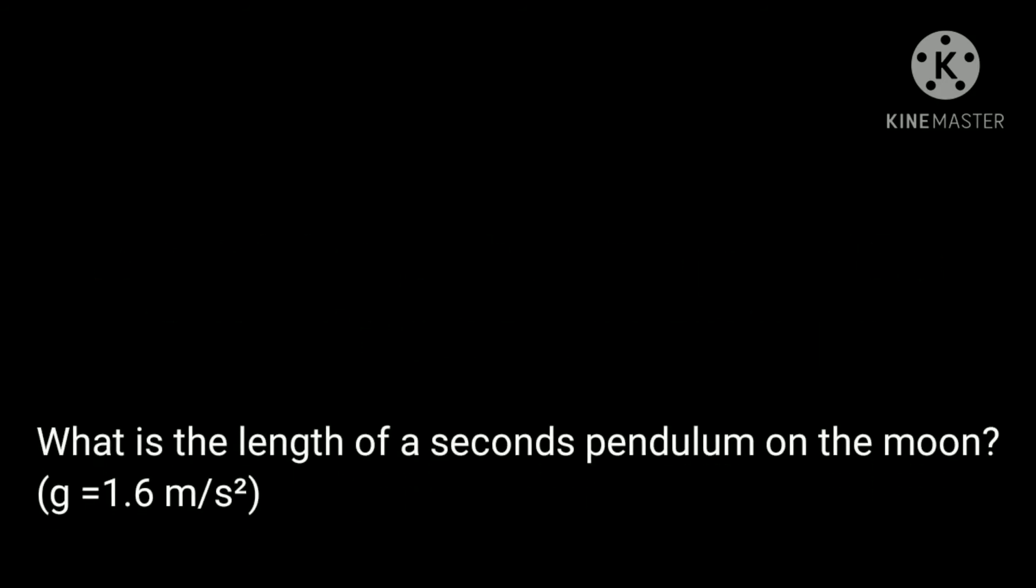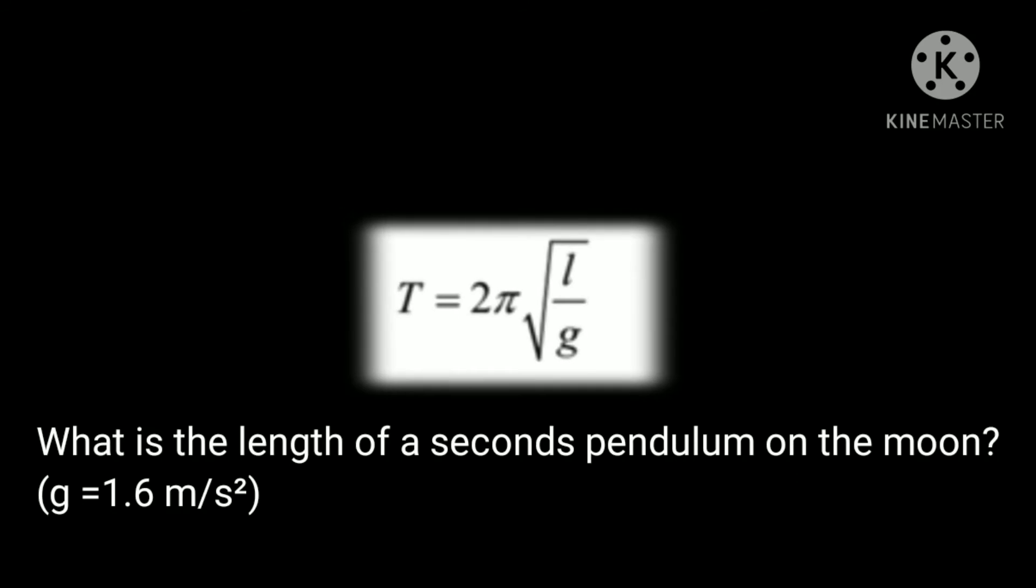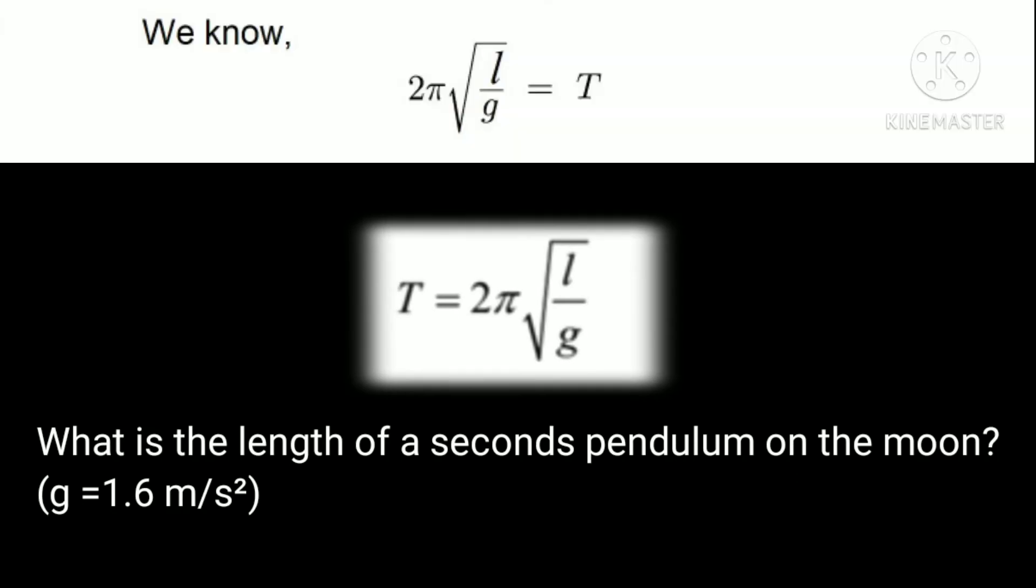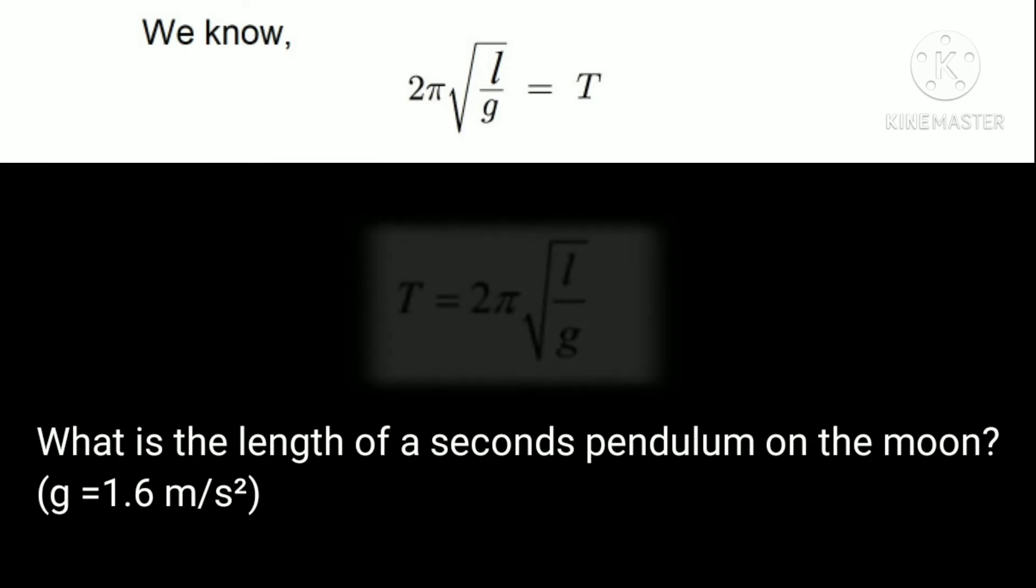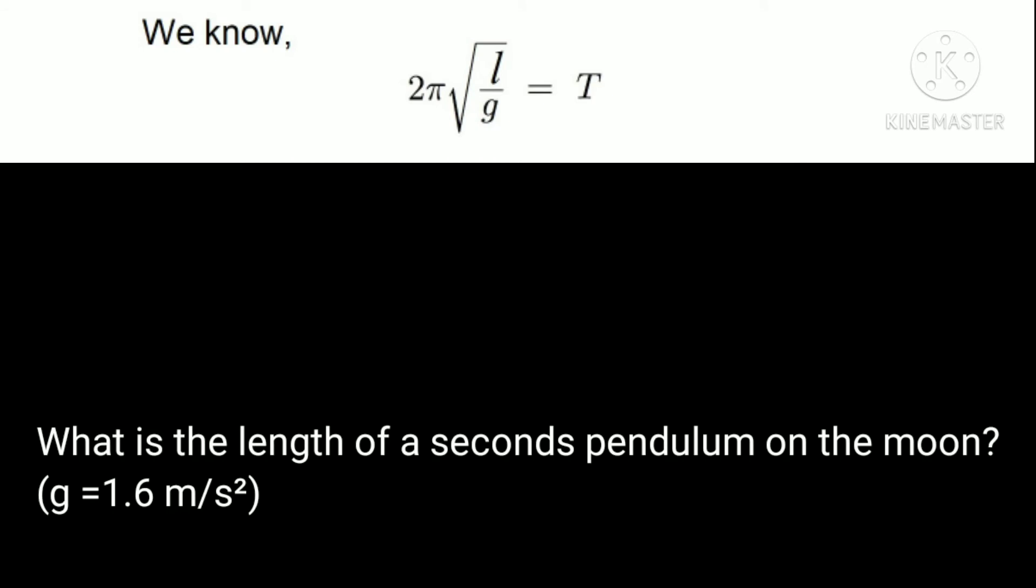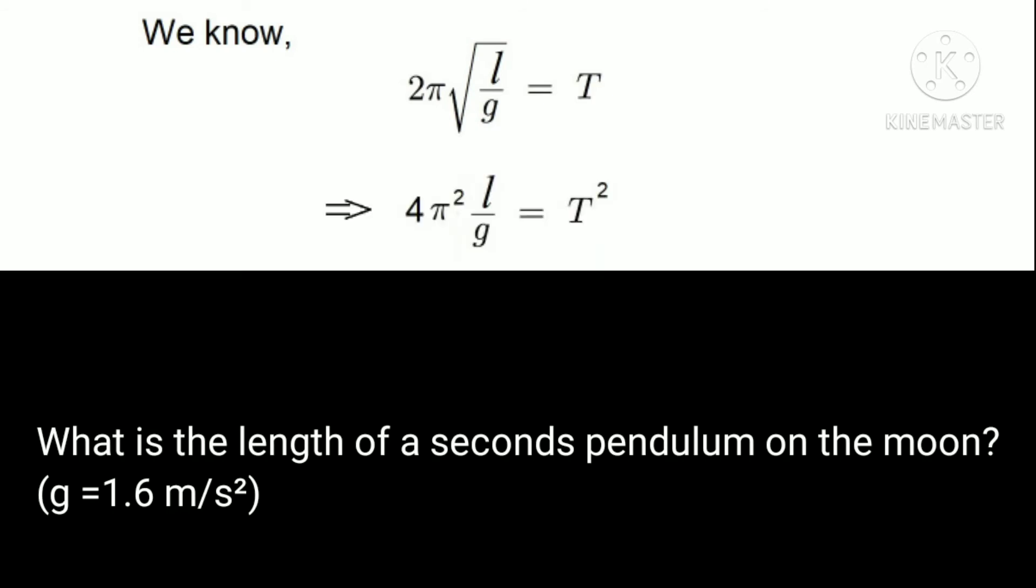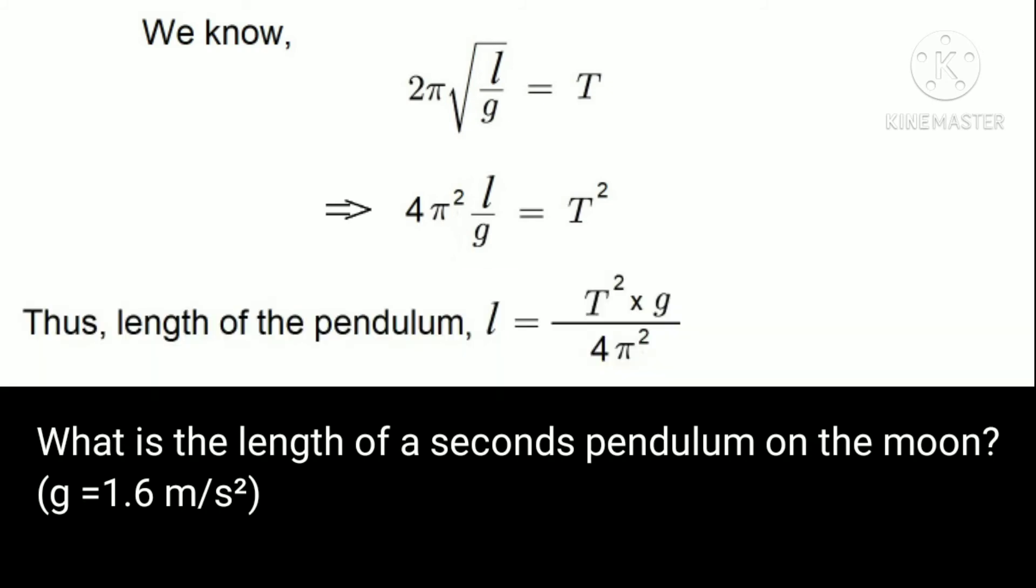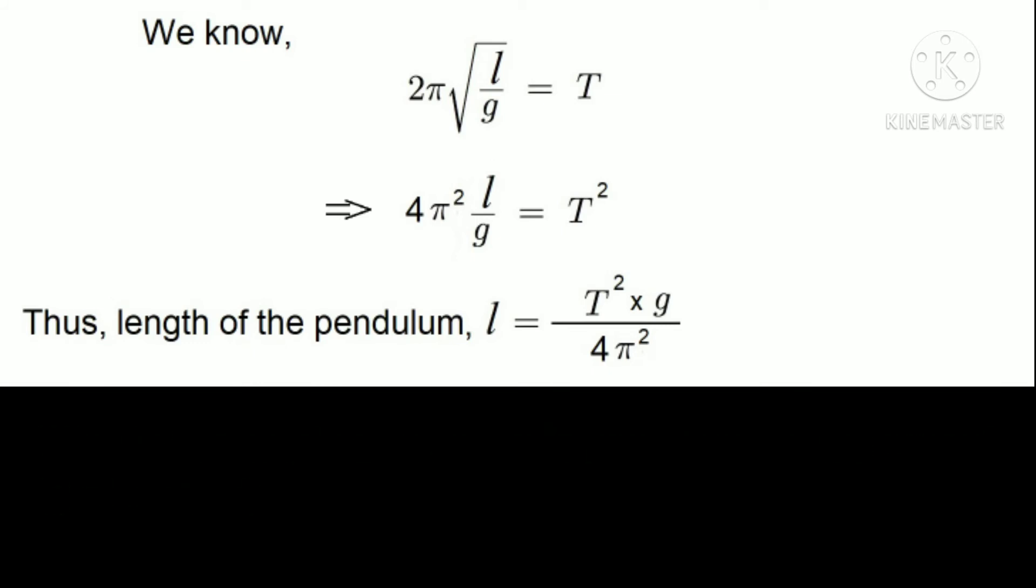We have the formula T is equal to 2π square root of l by g, which can be written like 2π square root of l by g is equal to T. Squaring both sides of the equation we get 4π² times l by g is equal to T². On rearranging we get length of the pendulum l is equal to T² g divided by 4π².